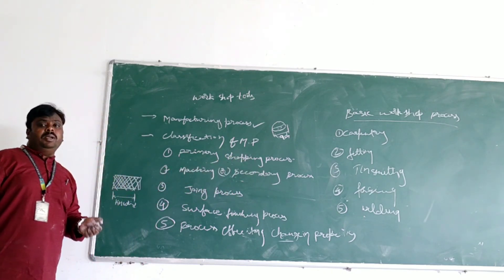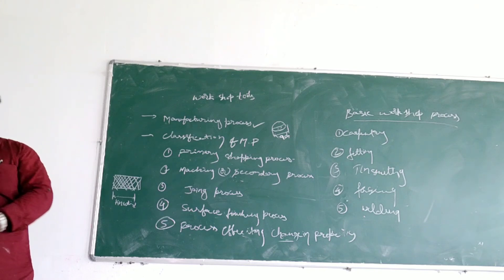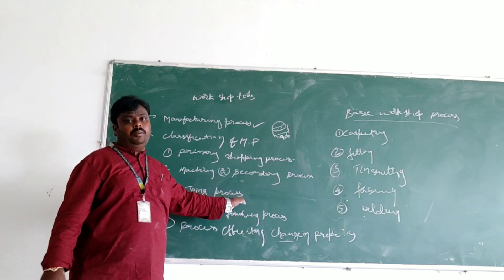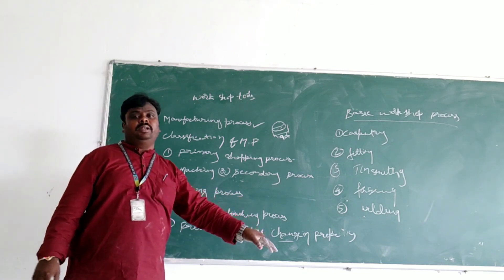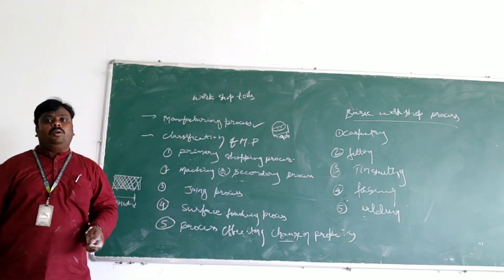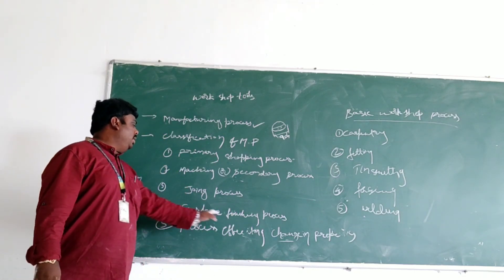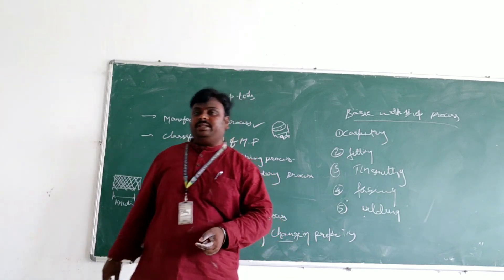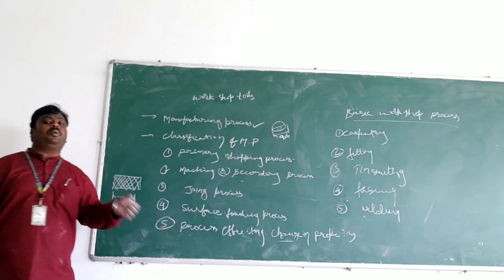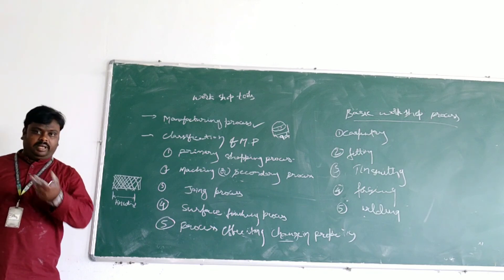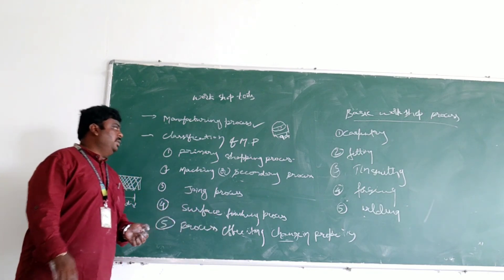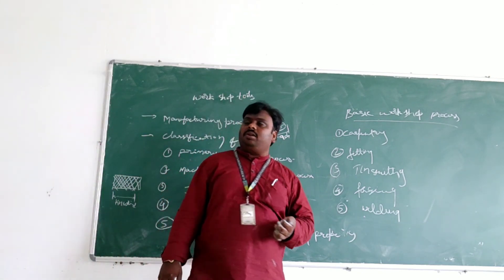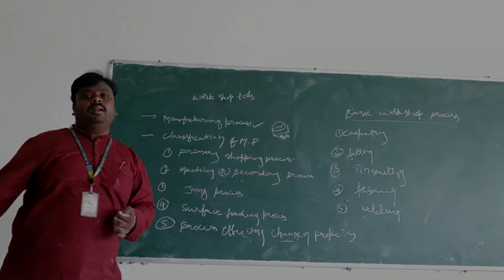Next is the joining process - joining of the metal, you can do the joining operation process. Next is the surface finishing process - surface you can do buffing and lapping, coating and powder coating - these are all the surface finishing process. Next is the process effecting of changing the properties - when you do the heating of the metals, automatically the property will change - the hardness will be increased or decreased, then you do the heating for the first. Next is the basic workshop process - what are the processes driving at workshops? First is the carpentry, sweating and tin smithing.